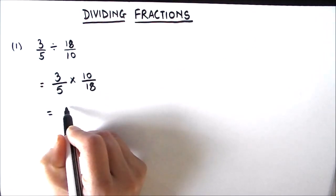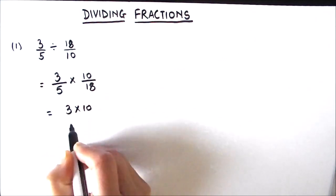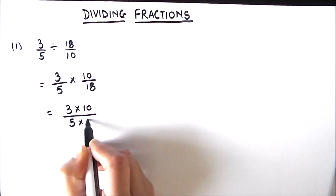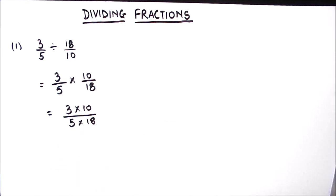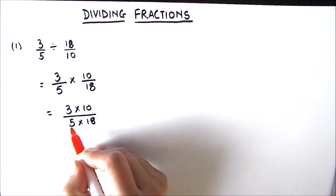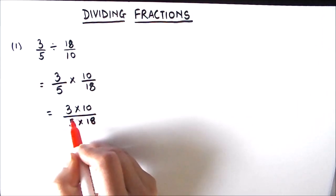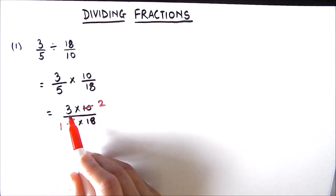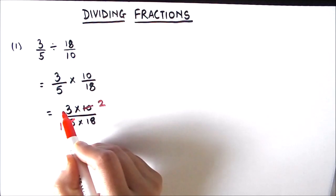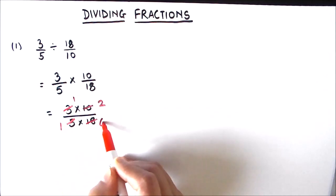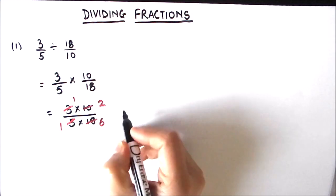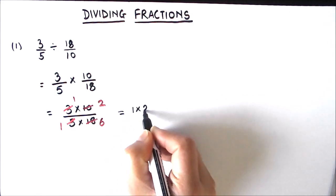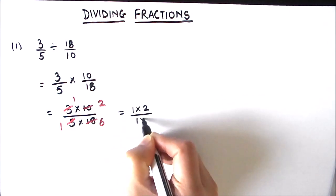So our numerator is 3 times 10 and denominator is 5 times 18. Now we can simplify this by cancelling out numbers with common factors. We have a common factor of 5 in 5 and 10 — 5 times 1 is 5 and 5 times 2 is 10. Similarly, we have a common factor of 3 between 3 and 18 — 3 times 1 is 3 and 3 times 6 is 18. So now we are left with 1 times 2 in the numerator and 1 times 6 in the denominator.